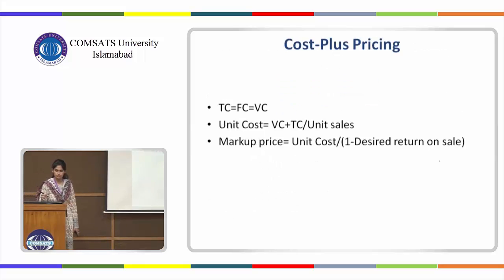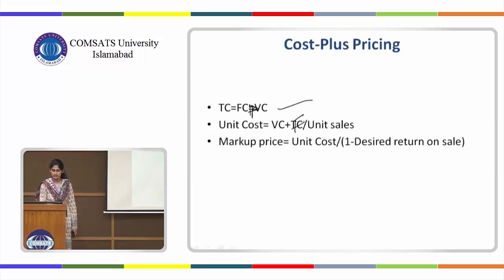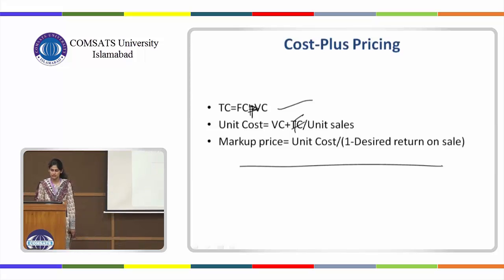Looking at the formulas of cost-plus pricing: total cost equals fixed cost plus variable cost; unit cost equals variable cost plus fixed cost divided by unit sales; and the markup price equals unit cost divided by (1 minus desired return on sales).